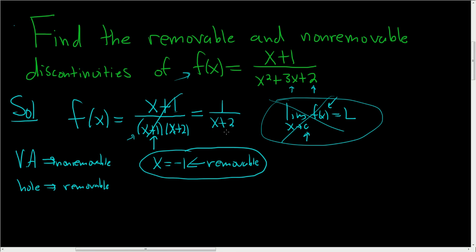And then to find the VAs, after you simplify, which we did, you just set the bottom equal to 0. So you get x equals negative 2. This is a VA, so this is non-removable.